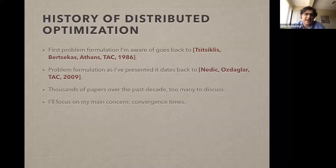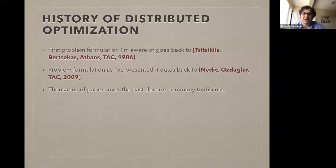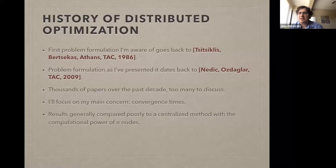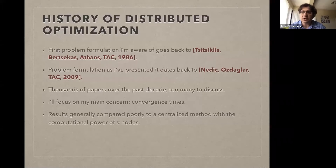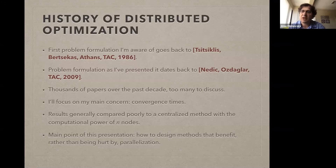If F_i(theta) is the loss suffered by theta on the data at node i, you want to find the theta that minimizes the average of the losses. This has a very long history — in one form or another, it goes back to the 1980s, and the precise formulation I've just stated dates to the seminal work of Nedich and Ozdaglar. Many thousands of papers have been written on this. But if you look at the state of the art up to the last two years, distributed methods compare quite poorly to centralized methods, and the more nodes, the worse the results.